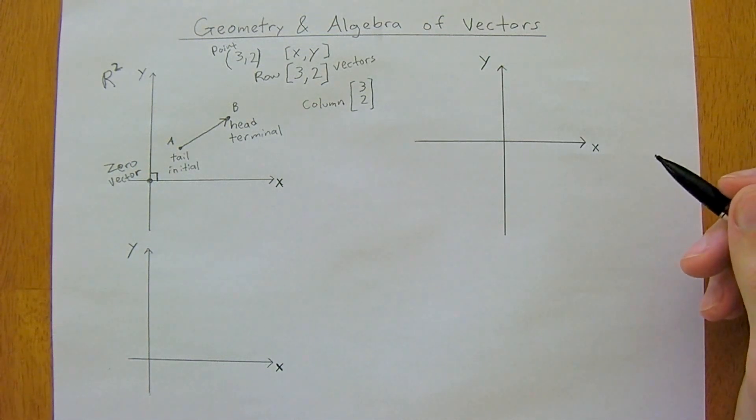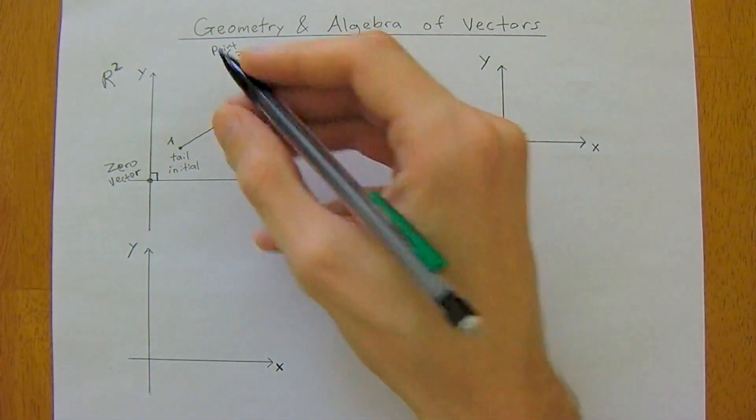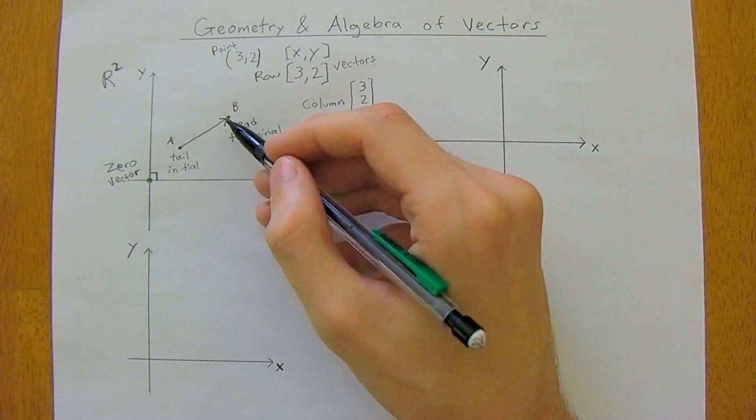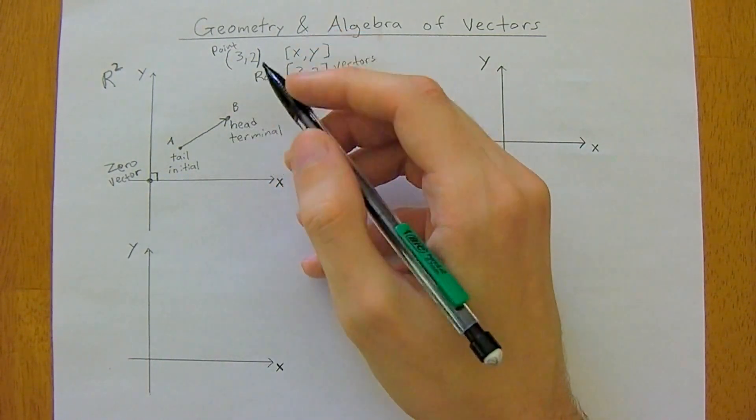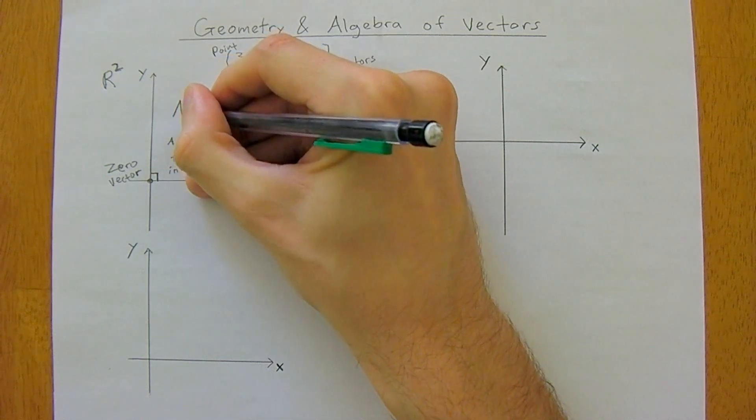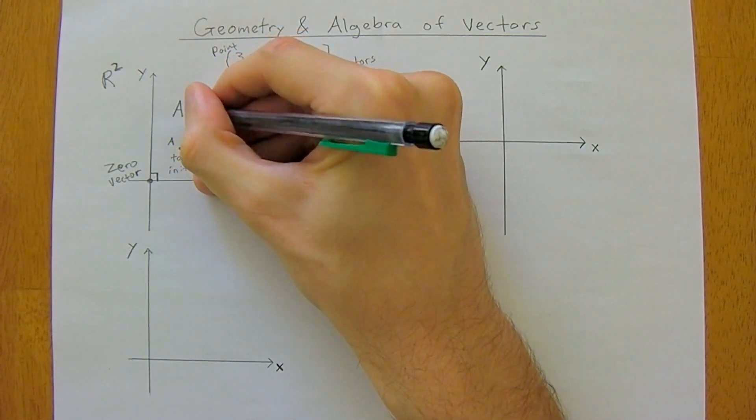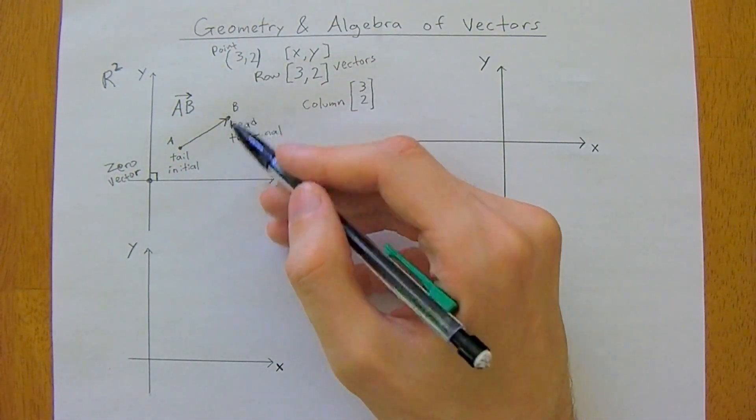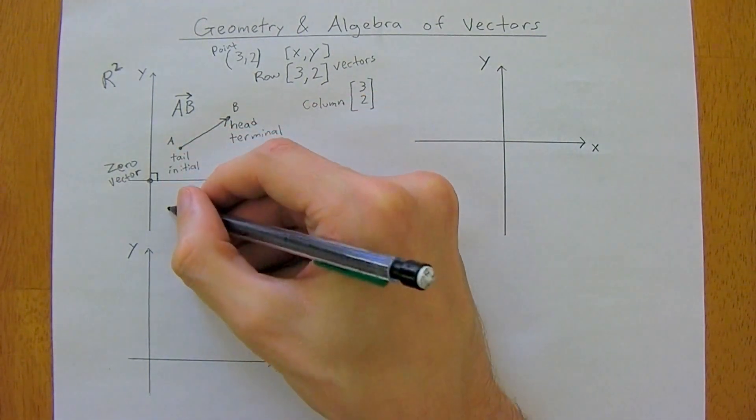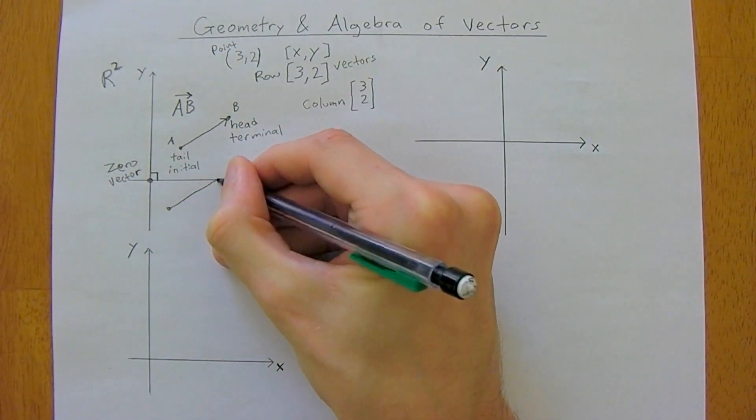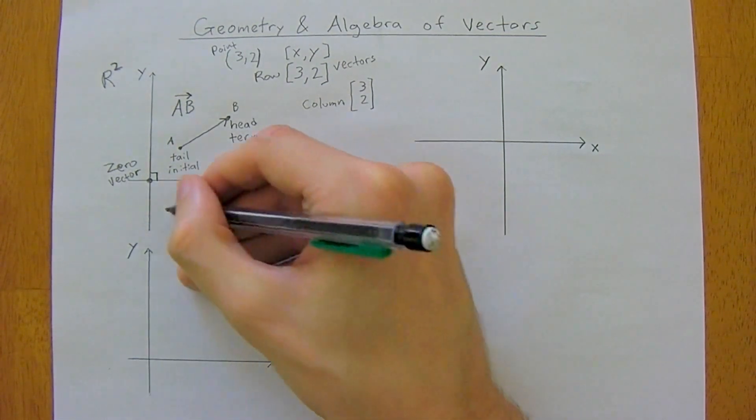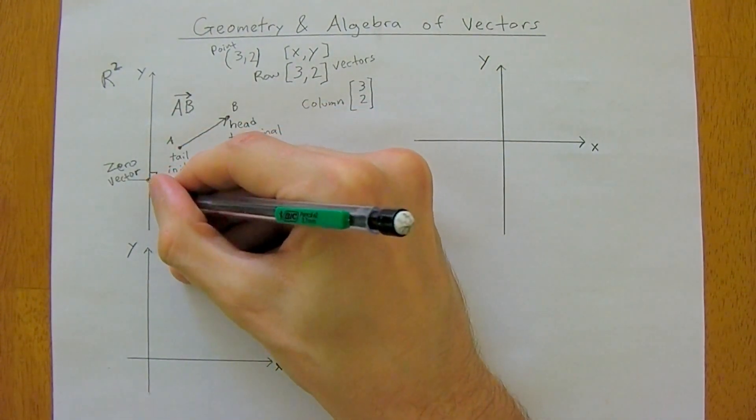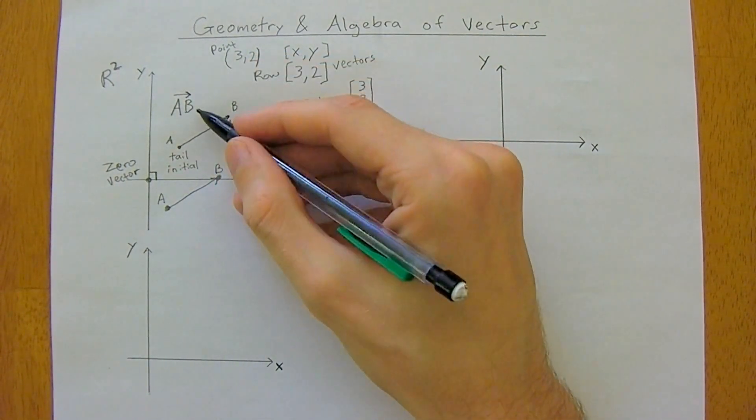Another important thing is to be able to translate vectors. This vector here from A to B, which we'd write as from point A to point B with a little arrow atop to denote that it is a vector, we could move anywhere, as long as it has the same direction and the same magnitude or displacement or length.